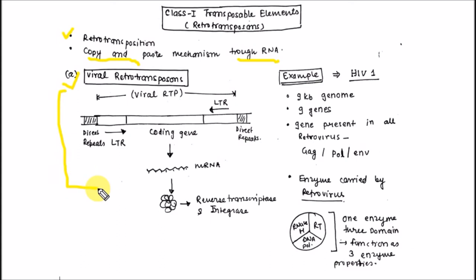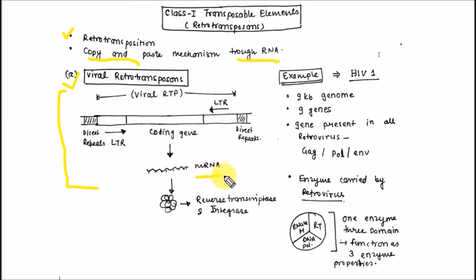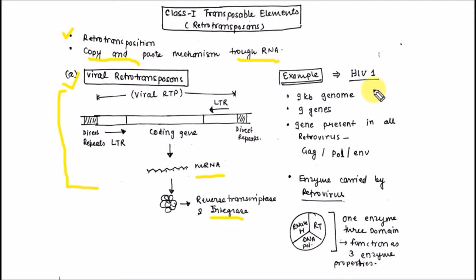Let's discuss viral retrotransposons. This is the simple representation of viral retrotransposons. The transposable elements or the coding gene are present in between the direct repeats and LTR, that is long terminal repeats. These coding genes code for the mRNA, and these mRNAs code for reverse transcriptase, integrase, and various enzymes.